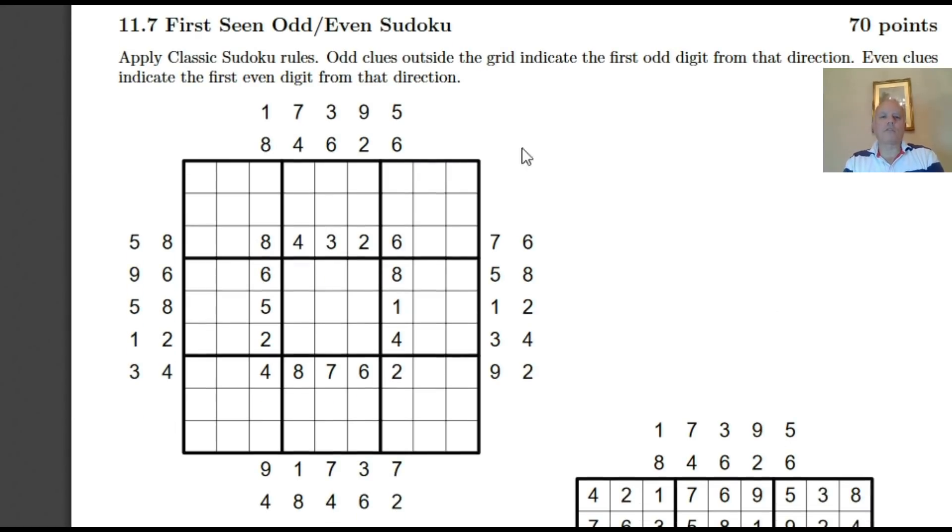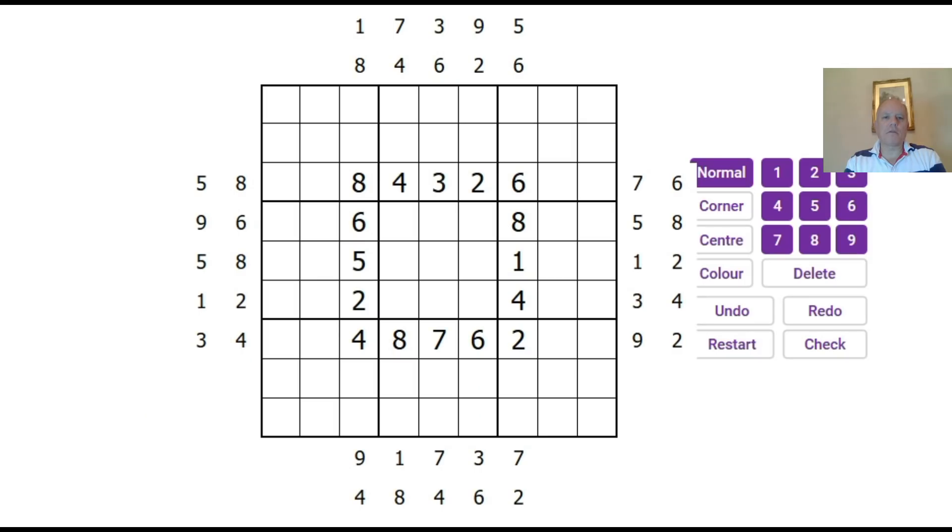The instructions are, as well as classic Sudoku rules, outside the grid there are a number of clues. Odd clues indicate the first odd digit from that direction, and even clues indicate the first even digit. So, I've copied the puzzle into our software, and you can solve it before watching me solve it. The link is in the description here.